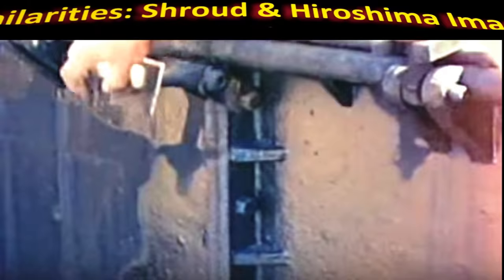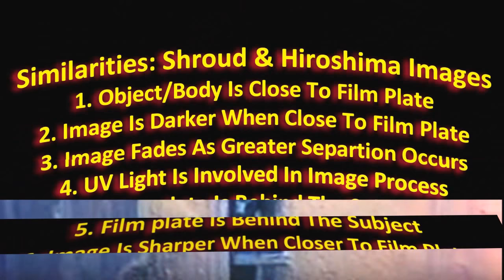Note, as we zoom in on the silhouette of the person whose image was left on the sidewalk, that when we get to the feet the image is darker. That's because the feet were close to the sidewalk and blocked more light — the body is acting as a shield. As more separation occurs and there's greater distance between the person and the sidewalk, the shadow fades in color, because there's a greater distance between the body and the film plate, which in this case is the sidewalk.